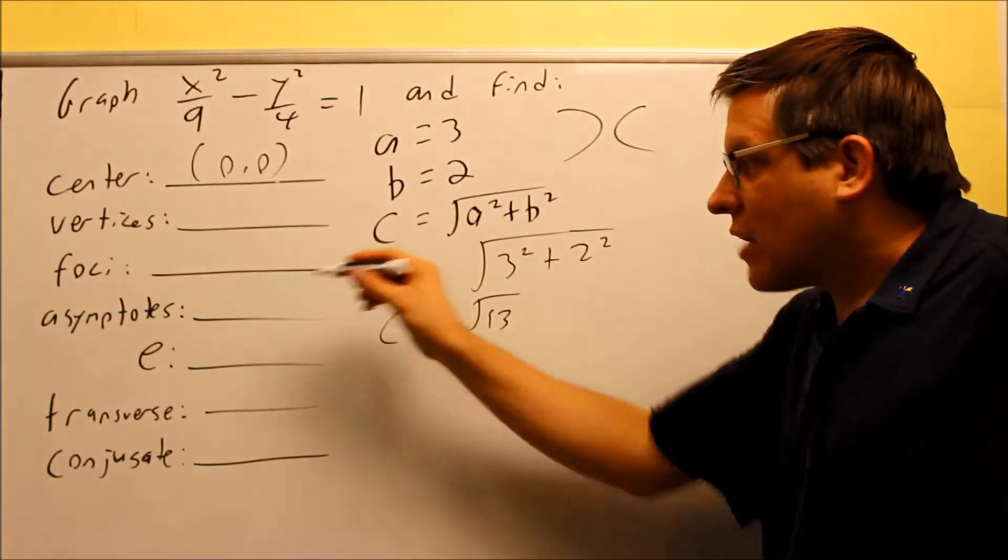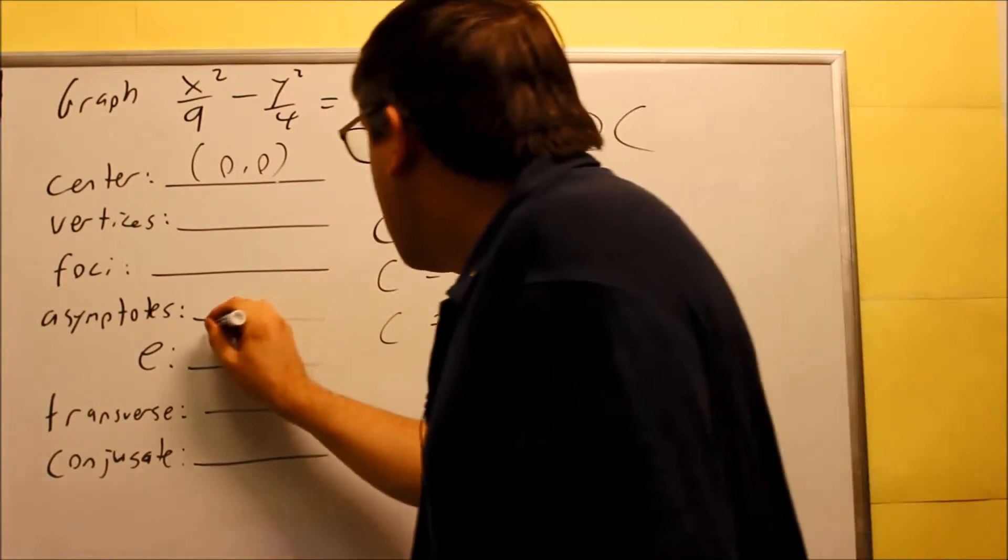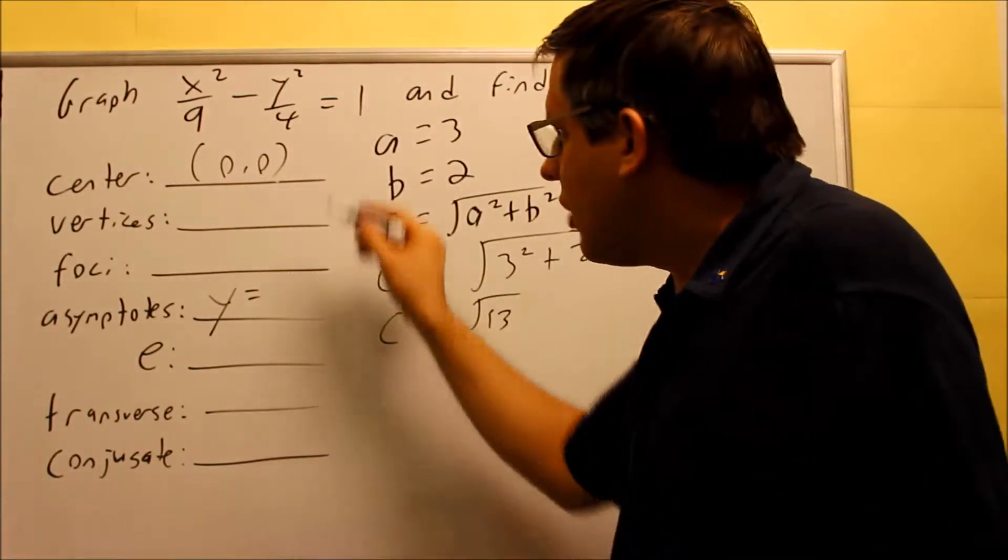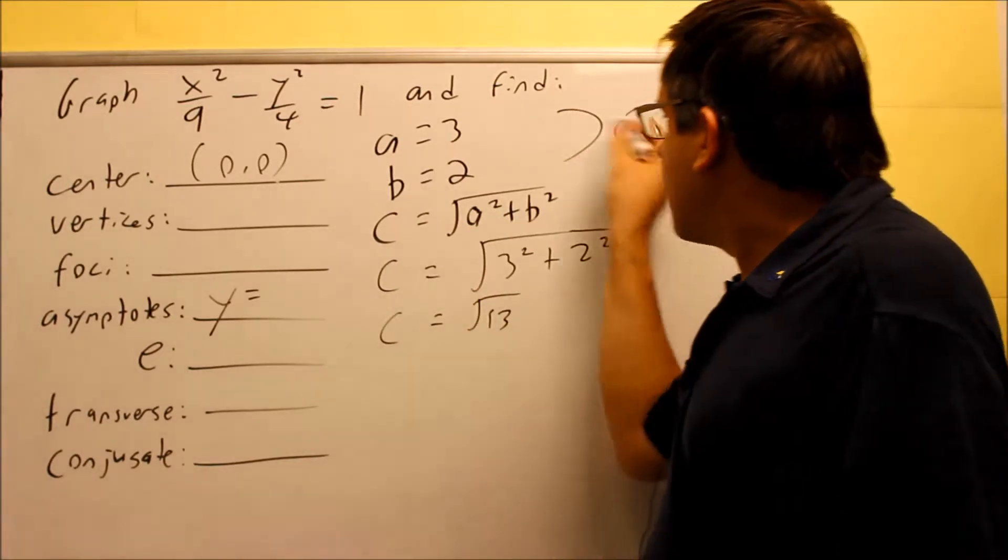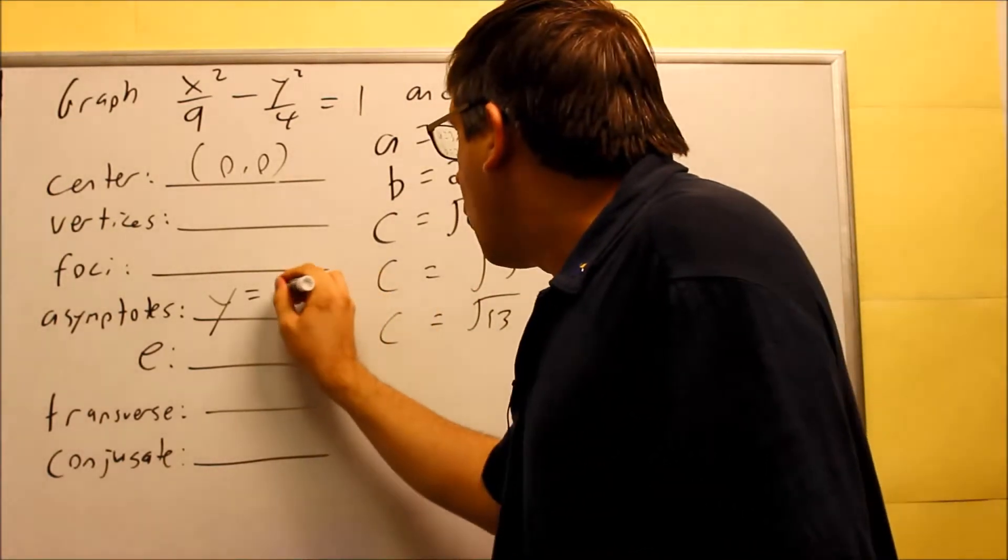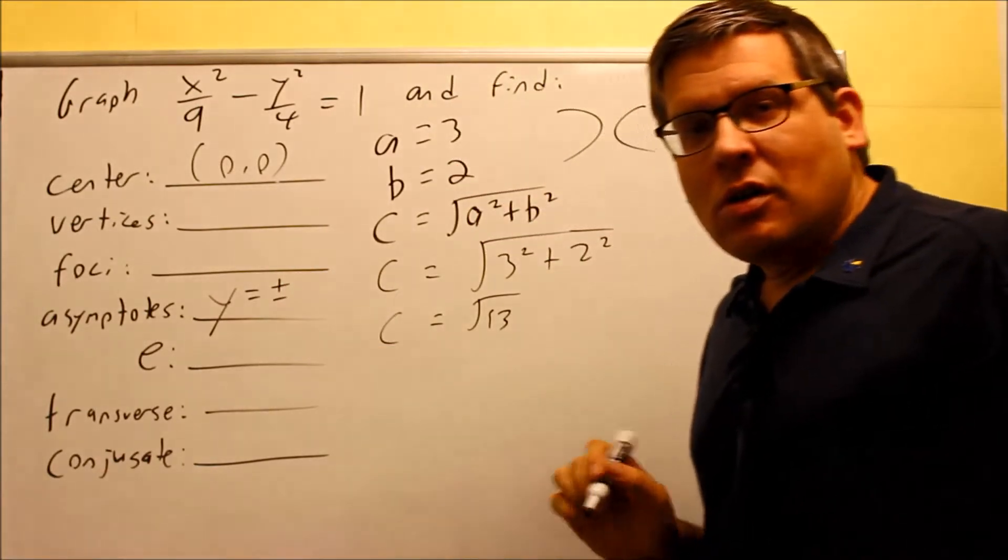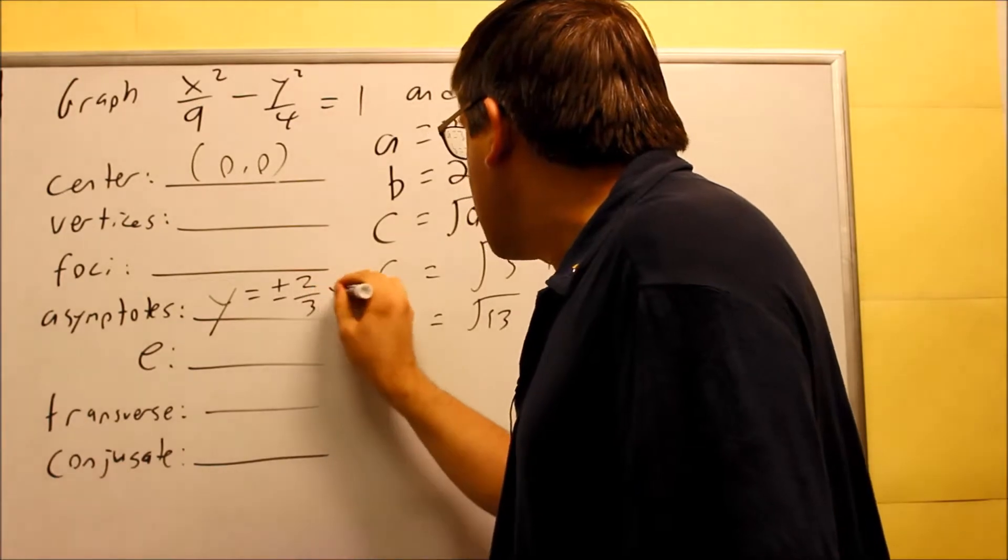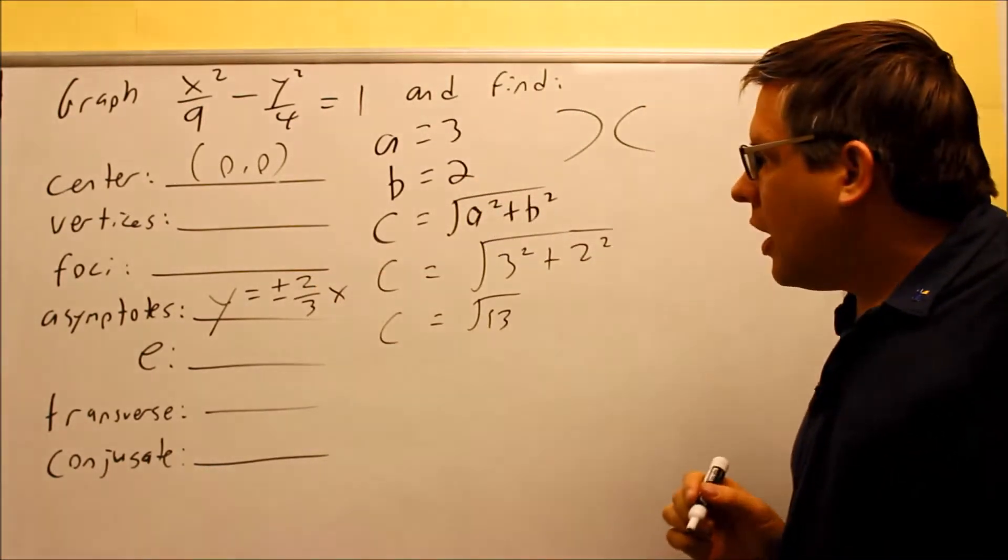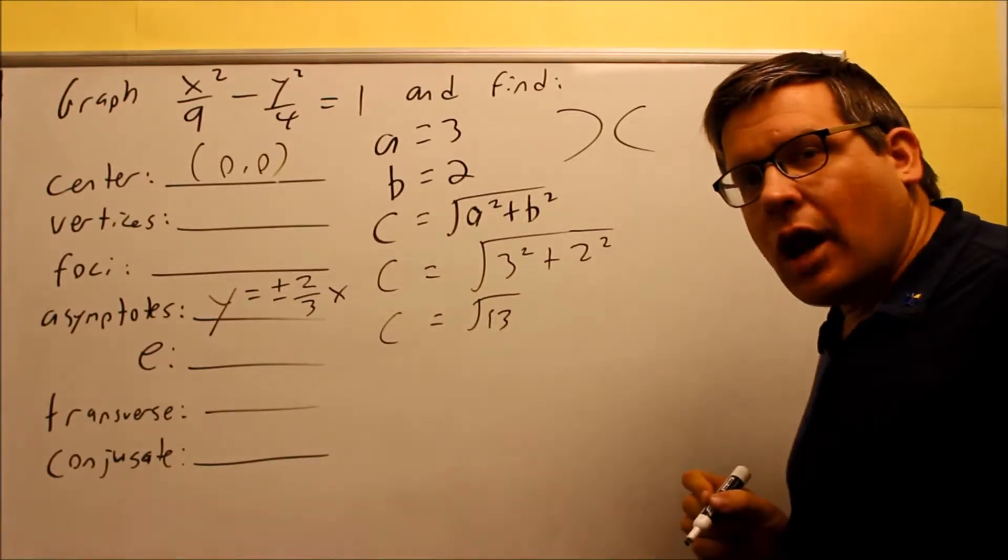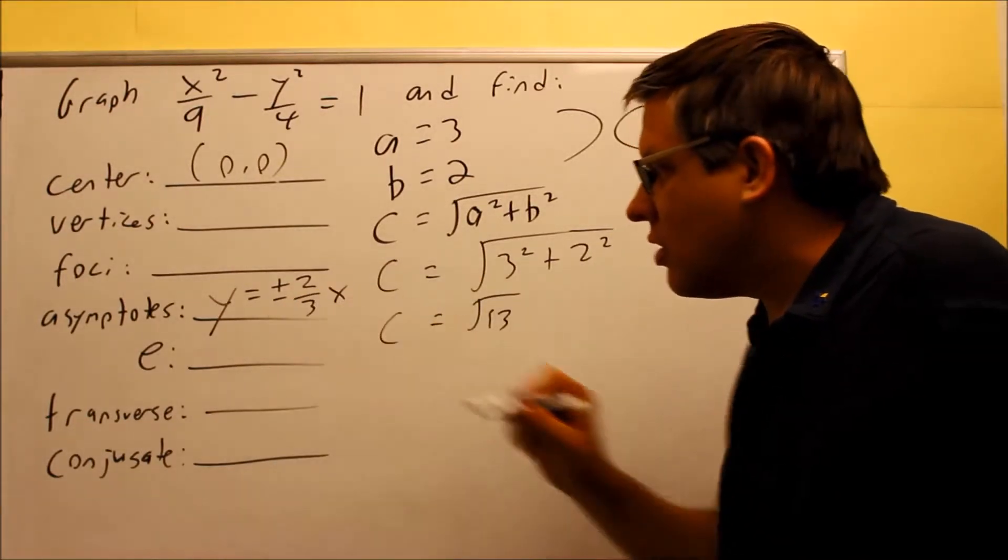For the asymptotes, if you look at the formula, if you have it centered at zero zero opening up sideways like we do here, then it's basically going to be y equals plus or minus b over a. In this case we have two-thirds b over a, so that would be plus or minus two-thirds x. That's the equation for your asymptotes.